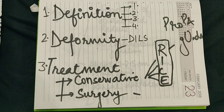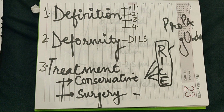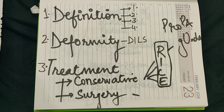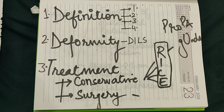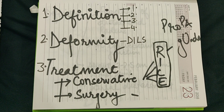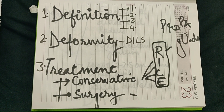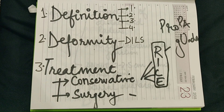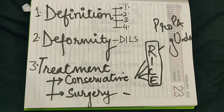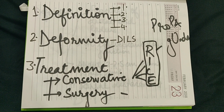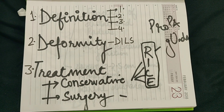In Colles' fracture there are three important headings: definition, deformity, and treatment. In definition there are four points. In deformity there is the mnemonic DILS. Treatment is conservative and surgery. In conservative management there is the mnemonic RICE, and in both conservative and surgery we go for reduction of the fracture site using the mnemonic 'propaganda'. You just have to stick on this paper.